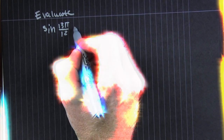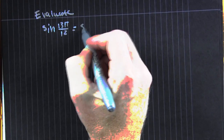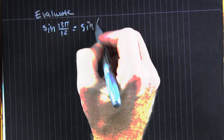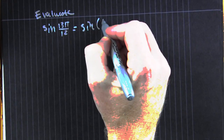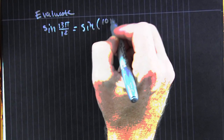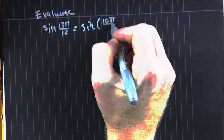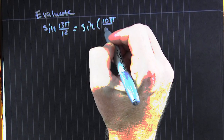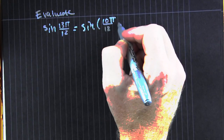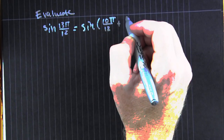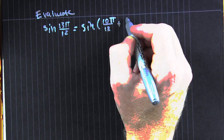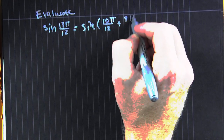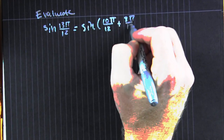You're trying to evaluate exactly the sine of 13π over 12. You're going to have to break those up into known angles, or radian measures anyway. Now this is an art and a talent — you're going to have to practice to get good at it.